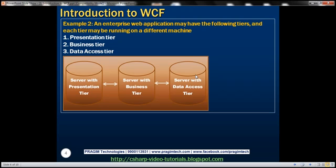If you have a few visitors to your application, then probably you can deploy all of the tiers on a single machine, because a single machine can handle requests from a few users. But if you are expecting hundreds and thousands of users, you need more hardware and more processing capability to handle requests from all of those users. So what you do is deploy your tiers on different machines, and these different machines have their own processors and memory.